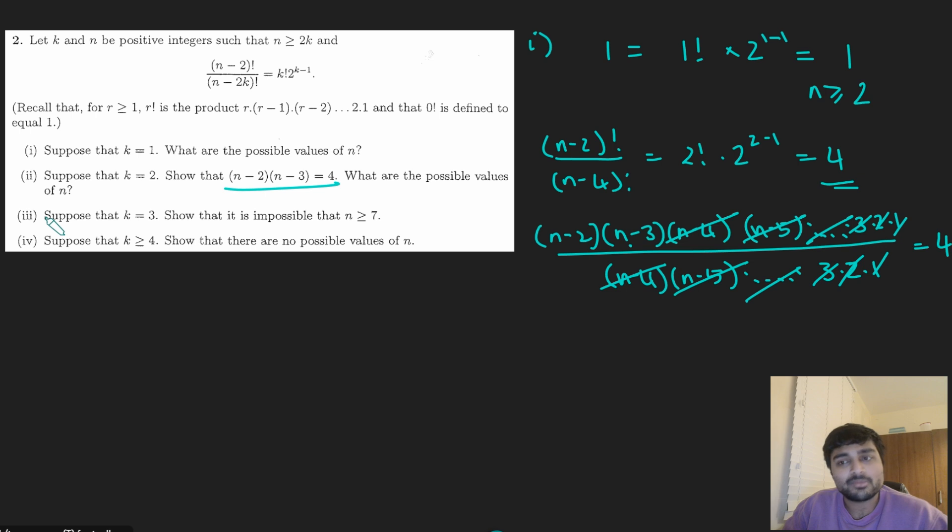And it asks us, what are the possible values of n? Now, you could just expand this equation and rearrange and use the quadratic formula, but that's a bit boring. What else could we do here? Well, remember n is a positive integer. And I notice here n - 2 and n - 3 are consecutive integers. They may not be positive, but they're certainly consecutive integers. And they multiply to give me 4.